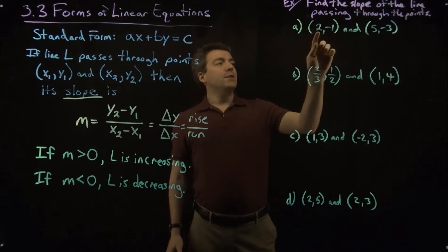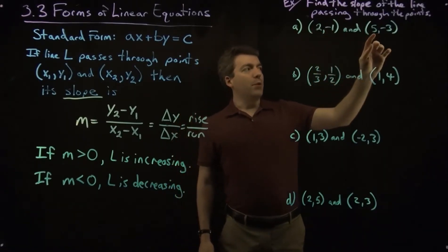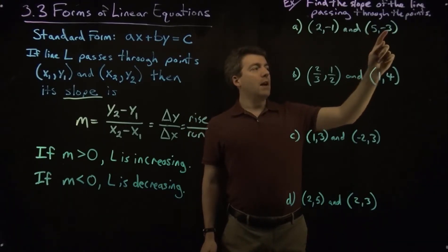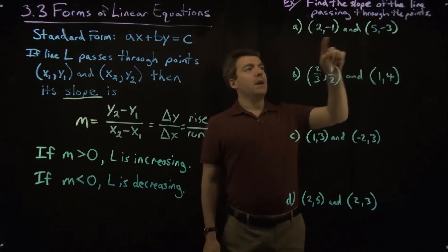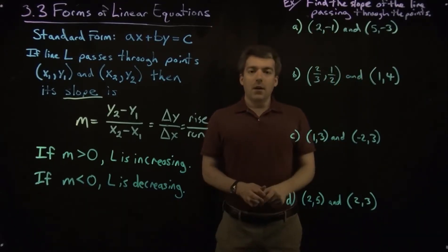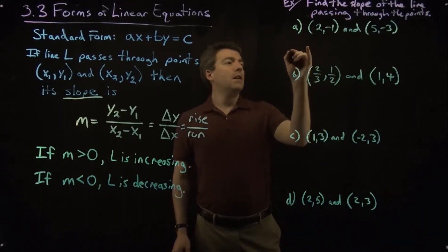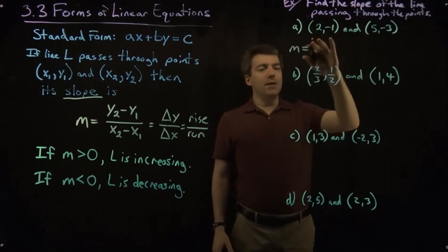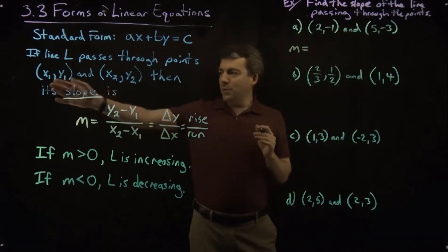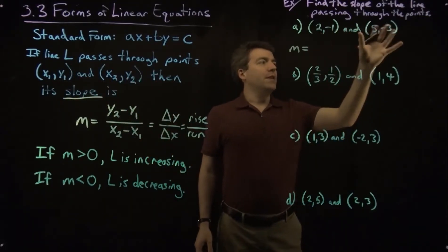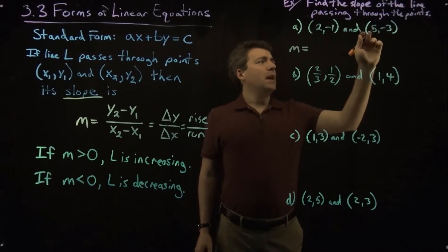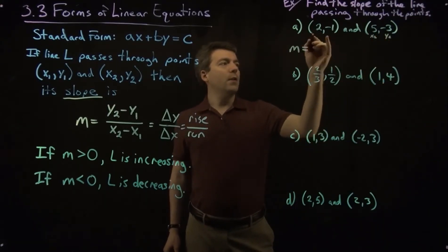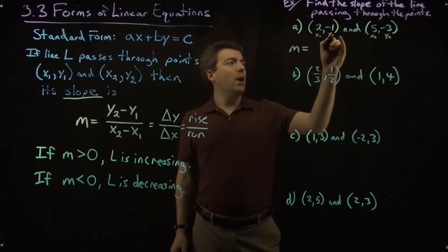The first point we have here is 2, negative 1. So that's x of 2, y of negative 1. Second point is x of 5, and a y value of negative 3. So 2, negative 1, 5, negative 3. All right, to find the slope, we're going to take the change in the y's. So the first thing we need to do is choose which one is the first point and which one is the second point. Let's just go ahead and call this one the second one. So this will be x2, and this will be y2. And over here we'll have x1, and this will be y1.